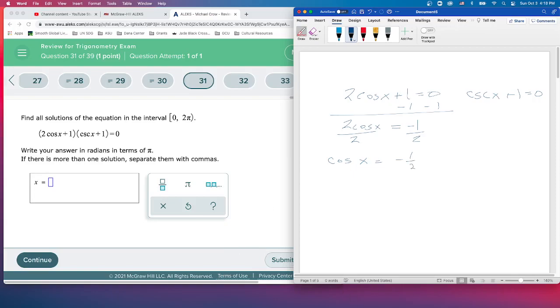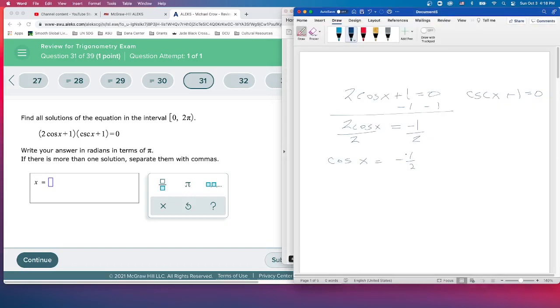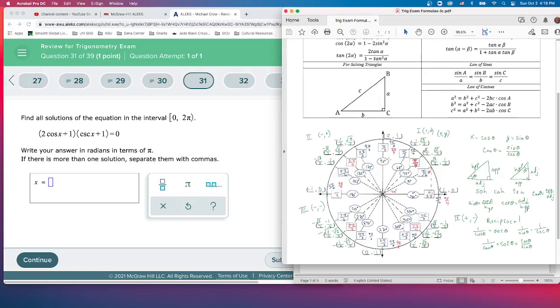So we look on the unit circle for all the places where cosine would be equal to -1/2. Cosine is the x-coordinate. It happens first at 2π/3, not π/3—that's positive 1/2. Negative 1/2 is over here at 2π/3, and then the other place all the way down here at 4π/3.